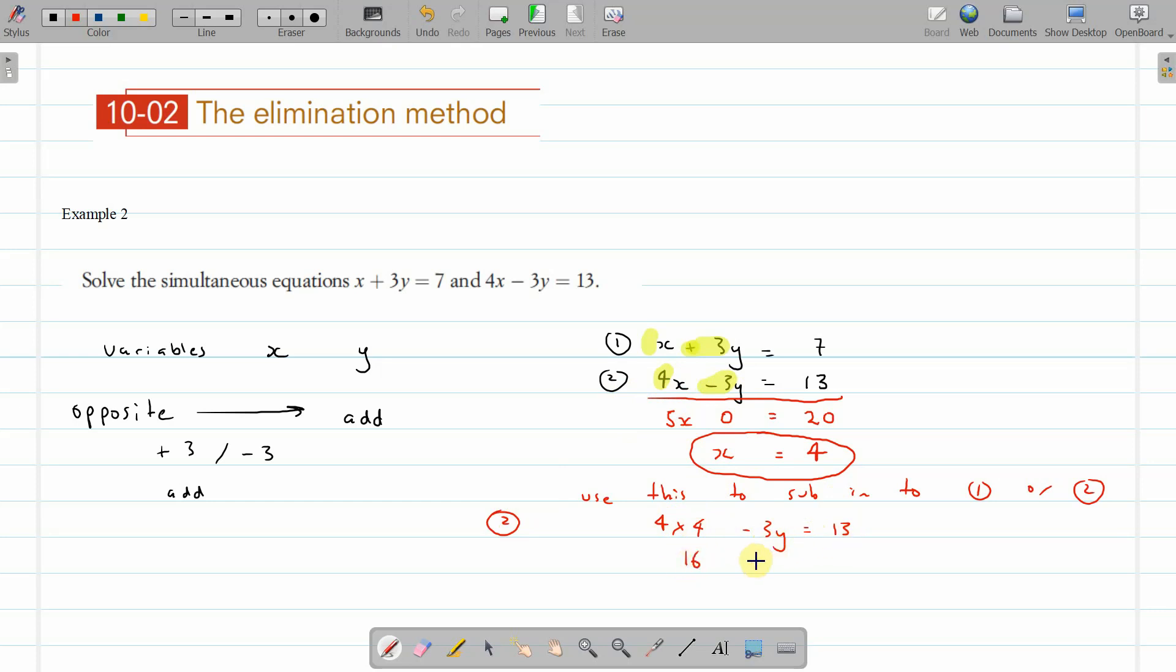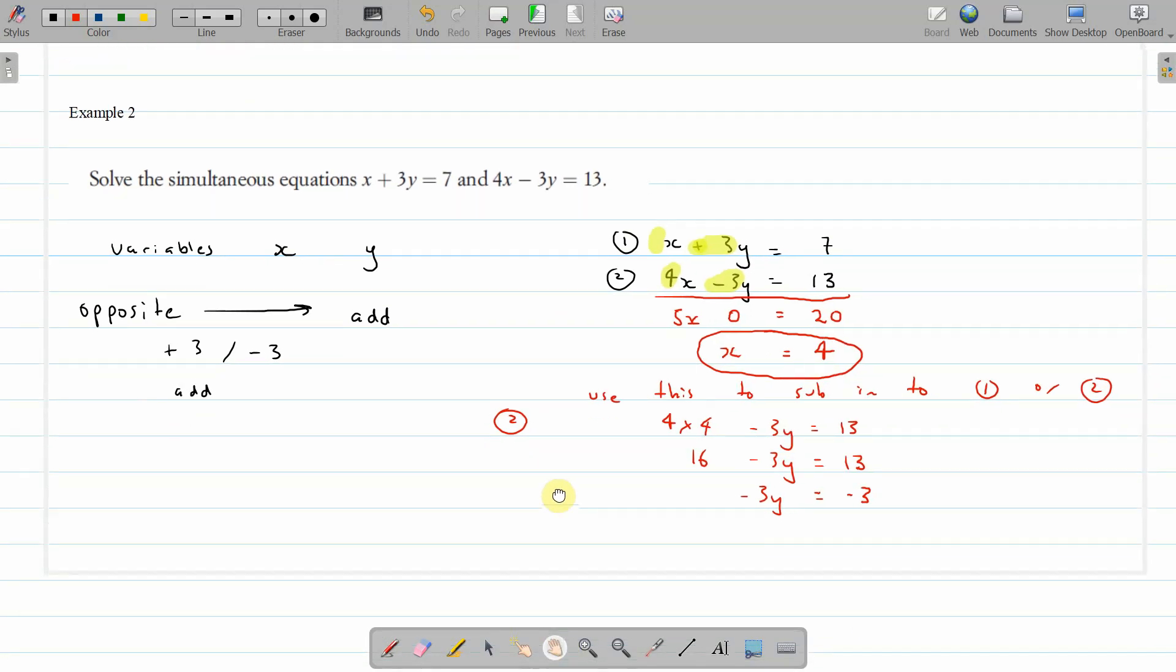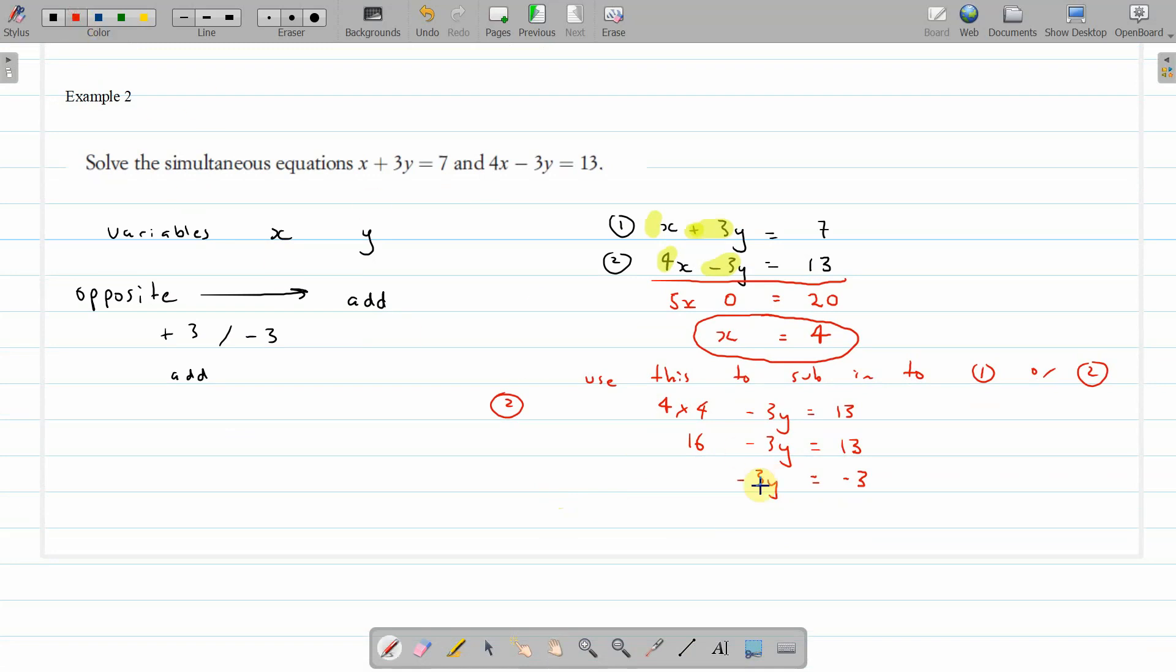And that's 16 minus 3y equals 13. And now what we do is take away the 16. We're left with minus 3y, 13 minus 16 is minus 3. And then we can divide by minus 3, leaves us with y equals minus 3 divided by minus 3 is 1. And there we have the second solution.